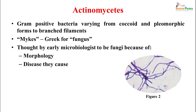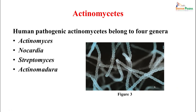They are gram-positive bacteria which vary from coccoid and pleomorphic forms to branch filaments. These branch filaments look quite like fungus and that is why they were earlier confused to be fungi because of the morphology and the diseases that they cause. Human pathogenic actinomycetes belong to four genera: actinomyces, nocardia, streptomyces, and actinomadura.